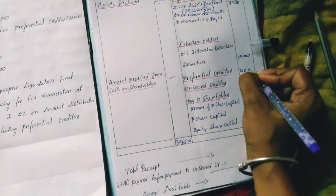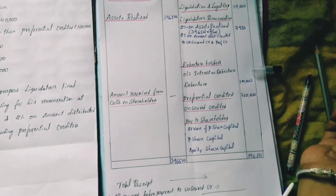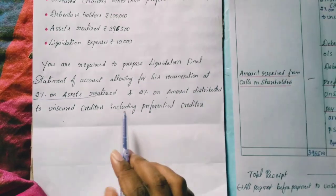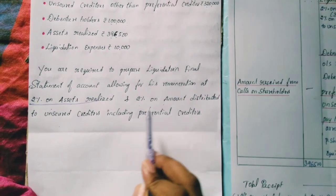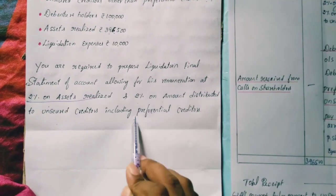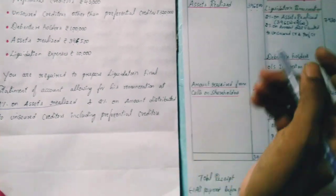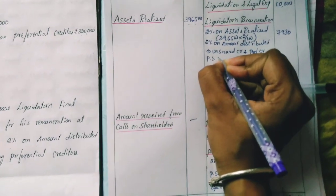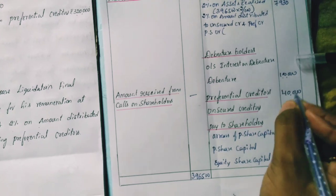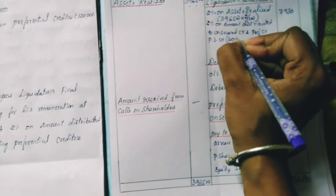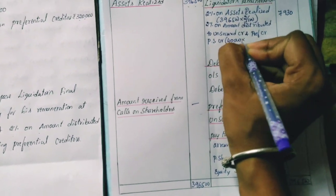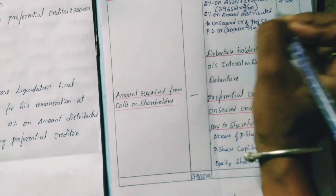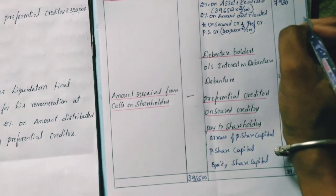Preferential creditors value is Rs.40,000. After paying liquidation expenses, remuneration, and debenture holders, the remaining balance is computed. Preferential creditors of Rs.40,000 are paid in full. The 2% remuneration is also calculated on the amount paid to preferential creditors as part of unsecured creditors.